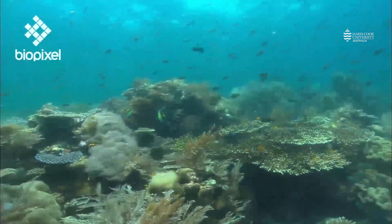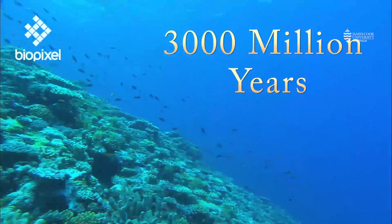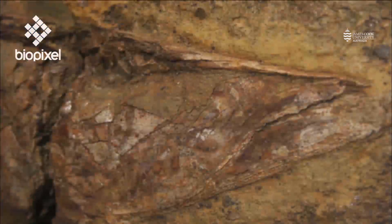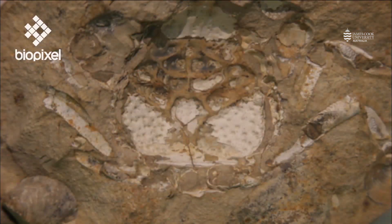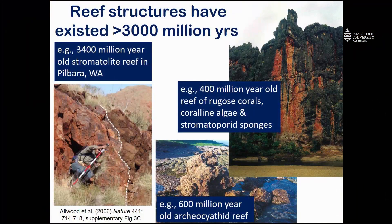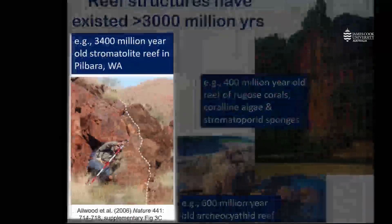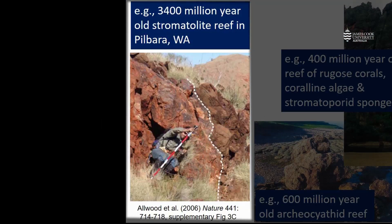In fact, reef-like structures have existed for more than 3,000 million years. We can see evidence of these ancient reef structures in the fossil record and in geological structures such as we see in some of these images here. If you go to the Pilbara region of Western Australia, you can see evidence of 3,400 million year old stromatolite reefs.